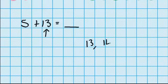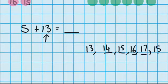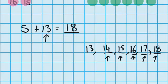I'll have fourteen, fifteen, sixteen, seventeen, and eighteen. So eighteen is our answer, and we can just check, did I count on five numbers? One, two, three, four, five, yes. So five plus thirteen equals eighteen.